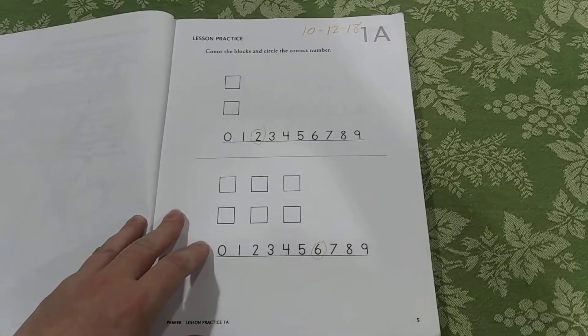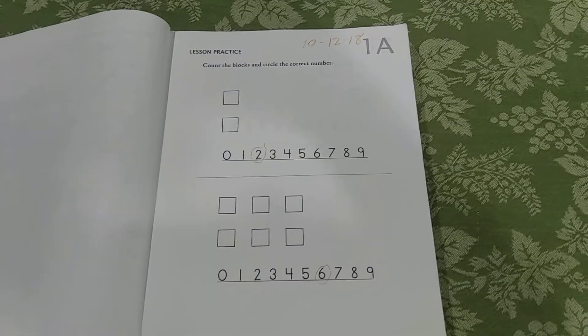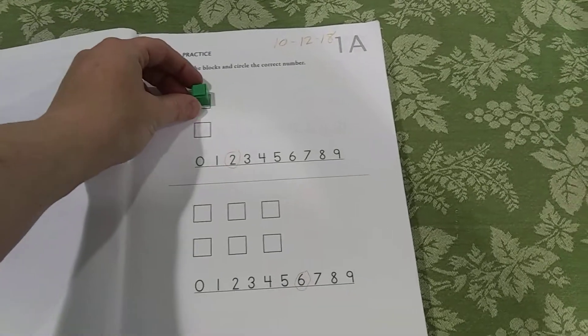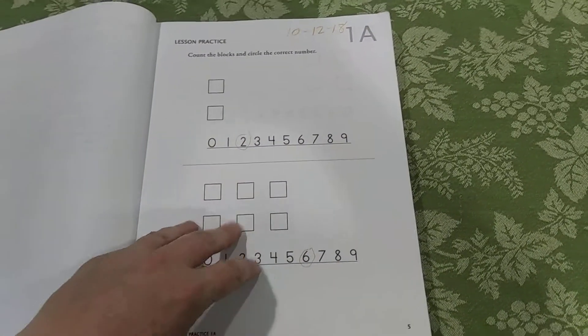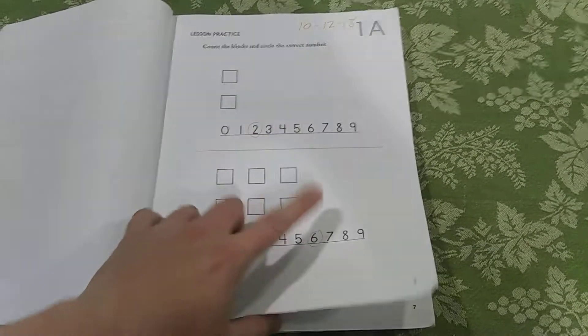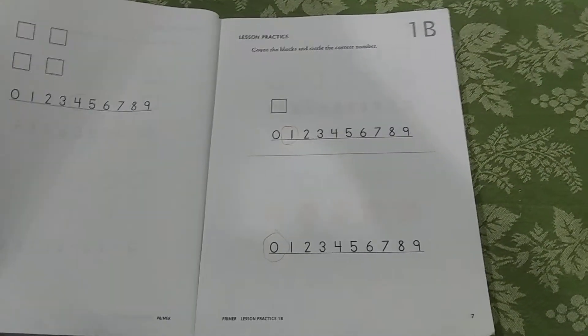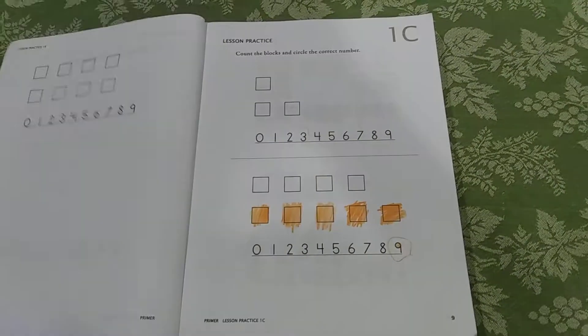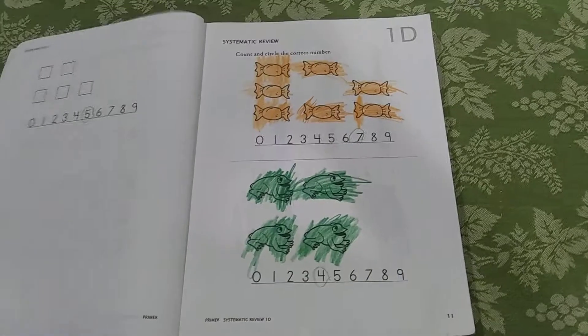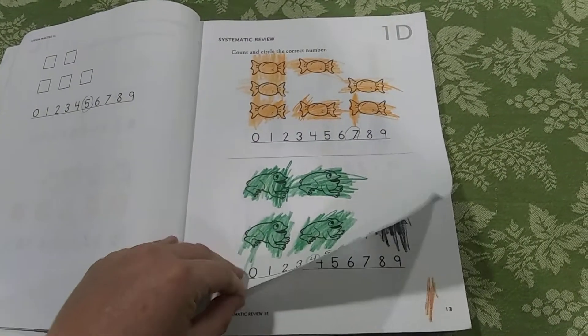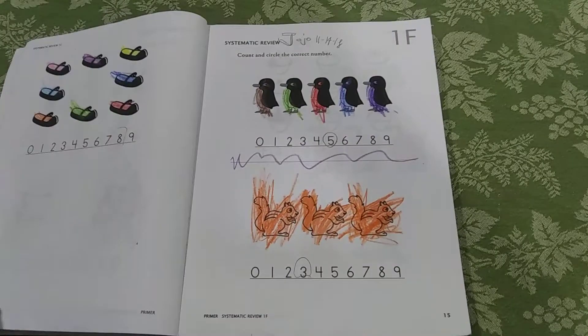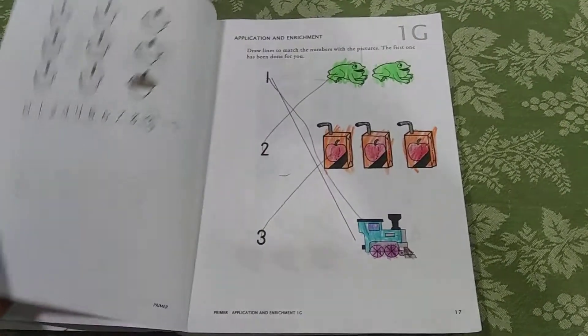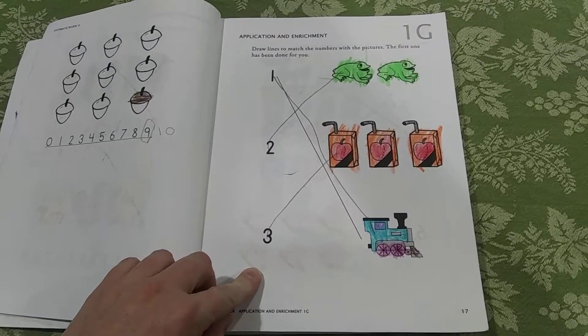It starts out real simple. You're going to count the blocks. My kids love to put the blocks right on the page, but you don't have to. So there's lesson A, and lesson B, and lesson C. Lesson D takes it further, and E, F, and G is a fun page. It's usually completely different.